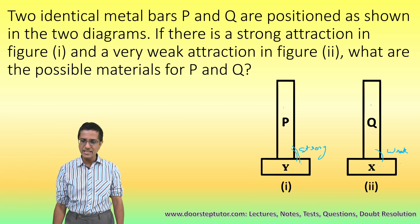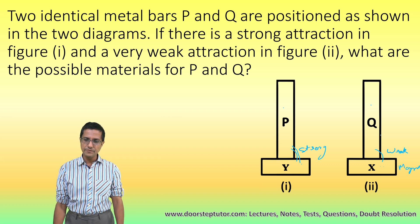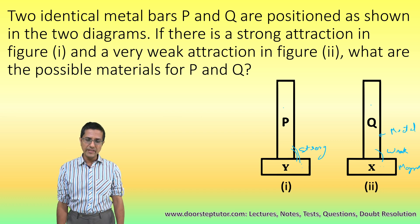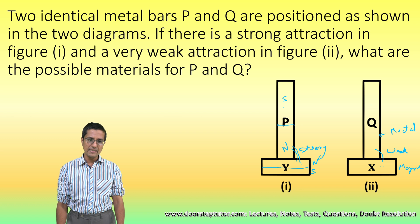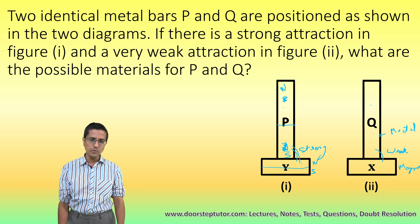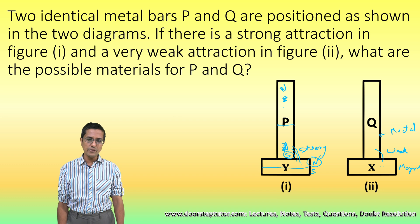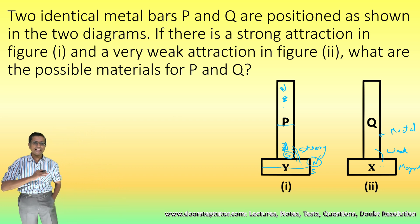In the weak attraction case, let's say one bar is a magnet and the other can be a simple metal. In the case of strong attraction, we definitely need a magnet, and the other one also has to be a magnet, because the strong attraction is produced by putting the north and south poles close together. Notice how the magnetization of Y has been done.